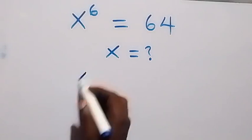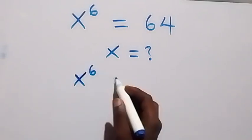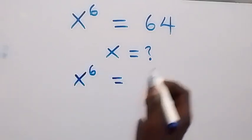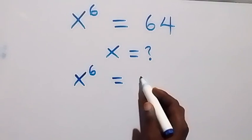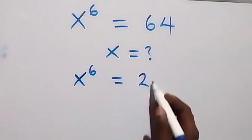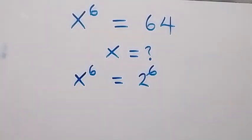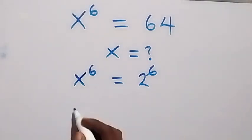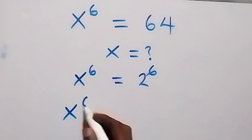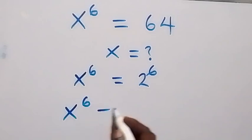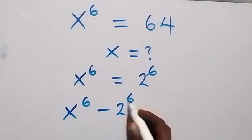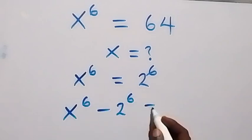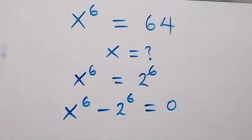Here we can write this as x raised to power 6 equals to 64, calculating as 2 raised to power 6. And this 2 multiplies itself 6 times. Then, taking it to this side, we have x raised to power 6 minus 2 raised to power 6 equals to 0.